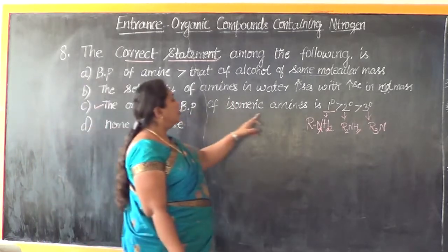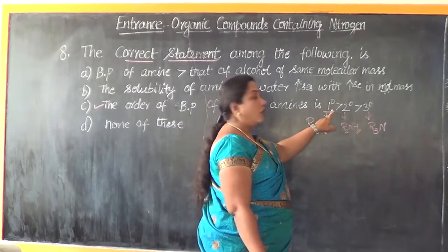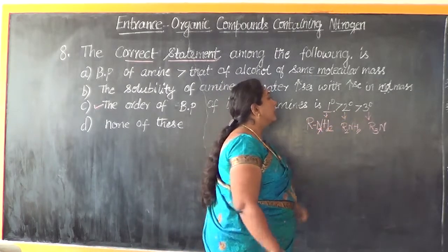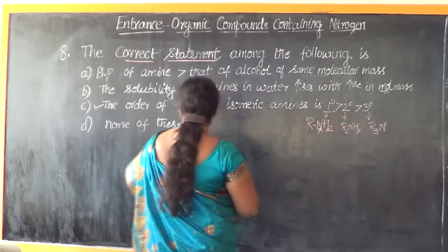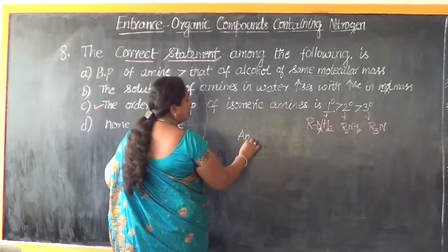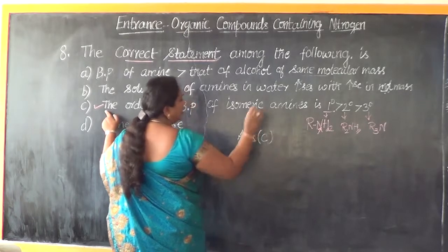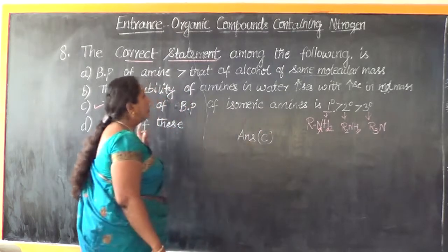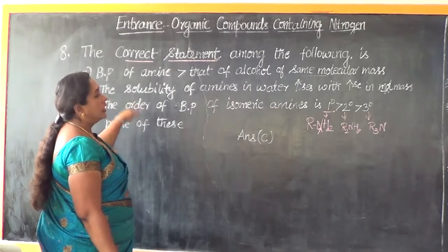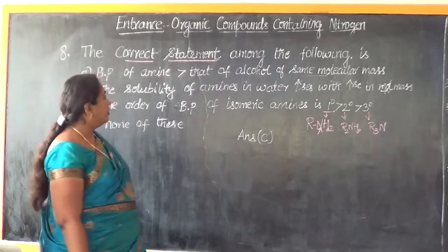The order of boiling point of isomeric amines is: primary amines greater than secondary amines greater than tertiary amines. So the correct answer for this question is option C — that is the only correct statement among all four statements given to us.